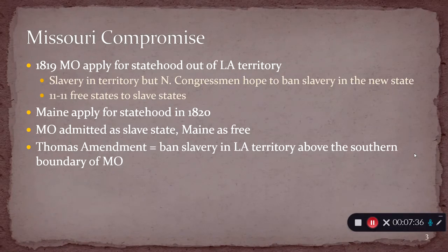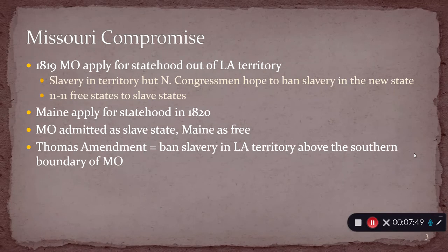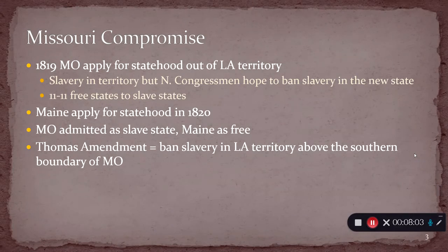Obviously having 12 to 11 isn't going to be a huge shift in power, but any shift can be seen as potentially leading towards that slippery slope — if we let this one in, then the next one's going to follow, and so on. Pretty soon you're going to have an overall tilt in one direction or another. So Missouri is applying for statehood, it had slavery as a territory, so naturally it's going to apply to have slavery in the state after that admissions process.